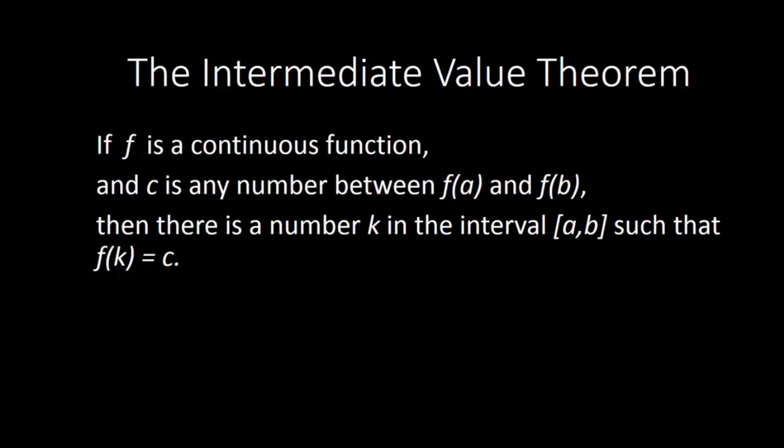The Intermediate Value Theorem states that if f is a continuous function, and c is any number between f of a and f of b, then there is a number k in the interval between a and b, such that f of k equals c.